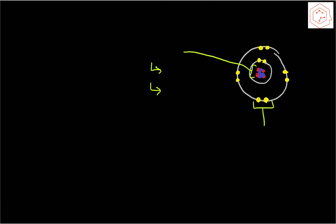All matter consists of extremely small particles called atoms, which are the smallest unit of any given element. Each atom consists of the same basic structure with subatomic particles as indicated on the diagram. You have a nucleus that consists of protons and neutrons, and you also have electrons in orbiting clouds that fall into various orbits.